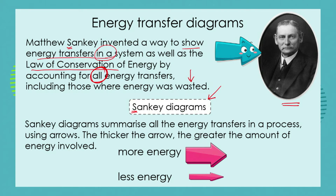Sankey diagrams summarize all the energy transfers in a process, and the diagrams use arrows to do that. Arrows are useful because they show direction — we can see which direction an energy transfer is taking place. In Sankey diagrams, there's an added piece of information: the thickness of the arrow tells us the amount of energy involved. A very thick arrow refers to lots of energy being transferred; a thinner arrow refers to less energy.